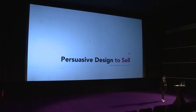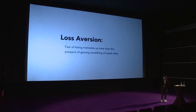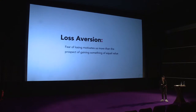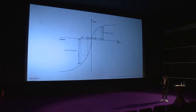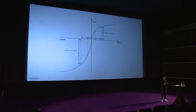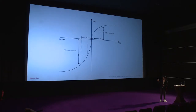Most of you are probably here to learn about how persuasive design can be applied in e-commerce, so I'm going to walk you through a few examples and patterns. The first one is loss aversion — the fear of losing motivates humans more than gaining something of equal value. According to the value function of prospect theory, if somebody gains 100 euros and then loses 100 euros, the feeling of losing that 100 euros will feel more painful than the joy of gaining it.